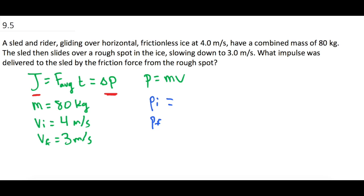We have, for mass, 80 kilograms times the initial speed, which was 4 meters per second. And that is equal to 320.